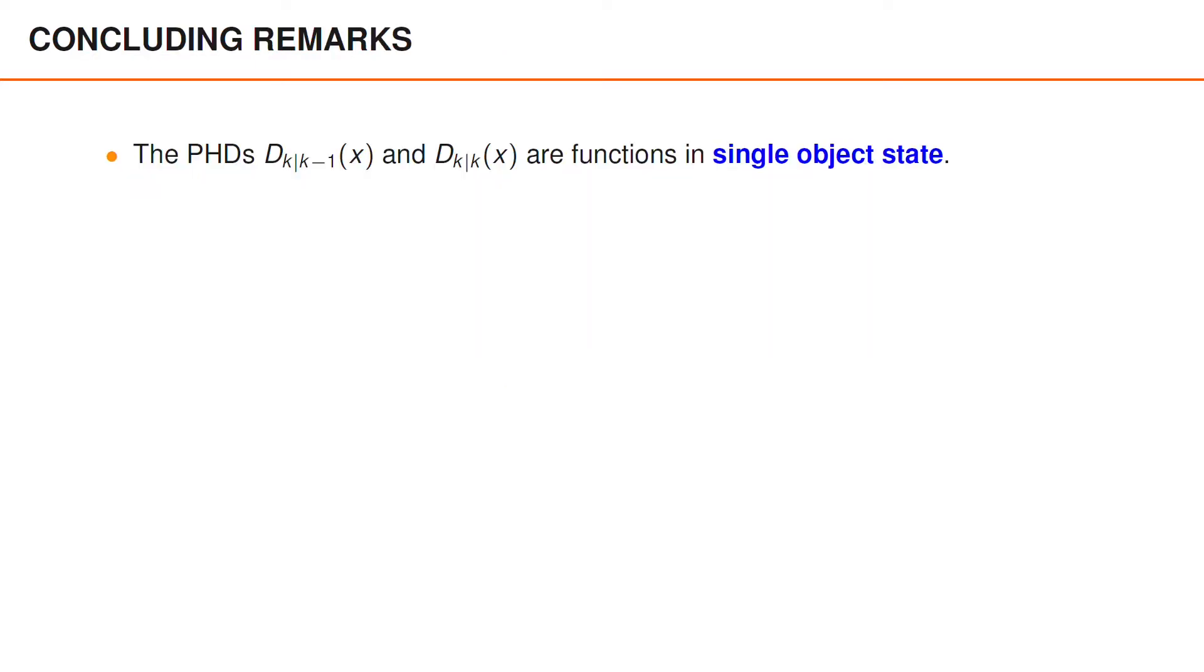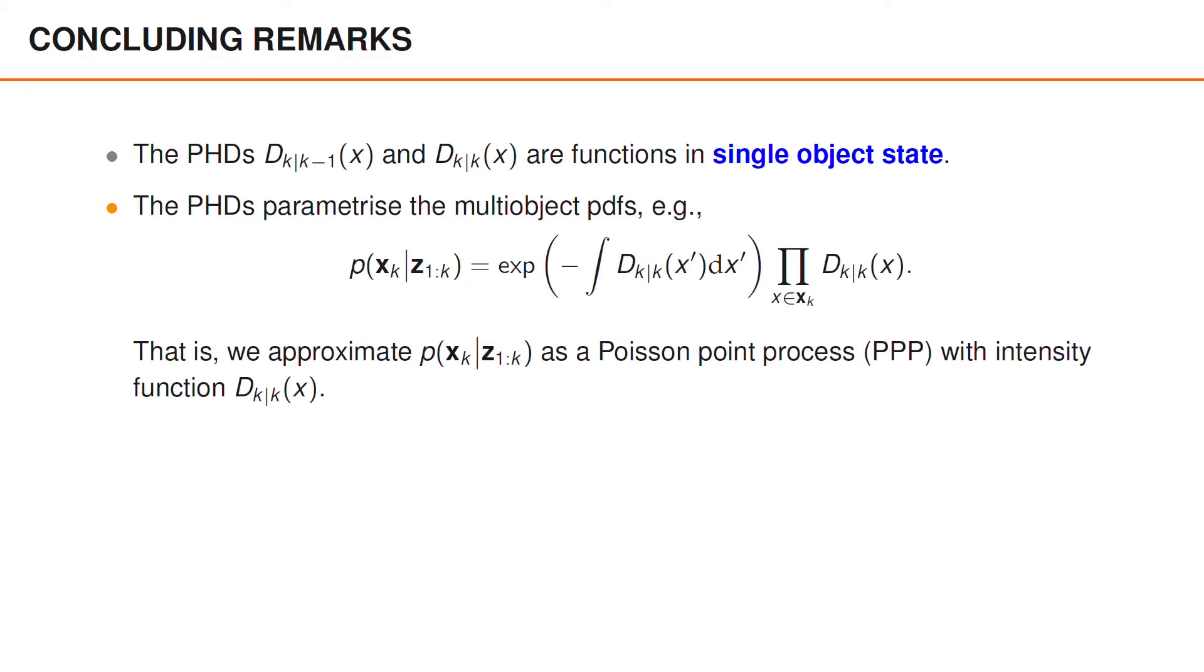I would like to highlight some of the things that we have learned. A first thing to observe is that we parameterize the multi-object PDFs using the PHDs, which are functions on single object state vectors. Specifically, we assume that the random finite sets are Poisson random finite sets, and that the PHDs are their intensity functions. For instance, the posterior at time k takes the following form, where we have e to the power of minus the Poisson rate, times a product over all the elements of the set of the Poisson intensity. Please note that even though the PHD is a function on single object state vectors, we are using it to describe a complete multi-object PDF that we can evaluate for sets that contain many object states.